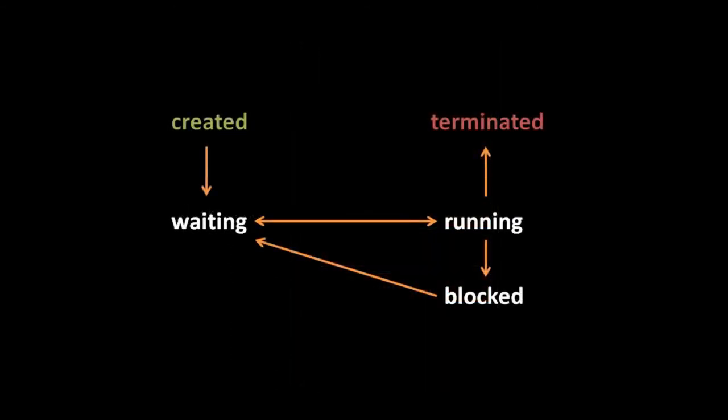A process transitions between a few different states. Most obviously, a process can be running — actually being currently executed by a CPU — or it can be waiting, meaning waiting for the scheduler to put it into the running state. While running, a process can also be transitioned into the blocked state. While blocked, a process will not be scheduled, so it won't run again until it is unblocked and put back into the waiting state.